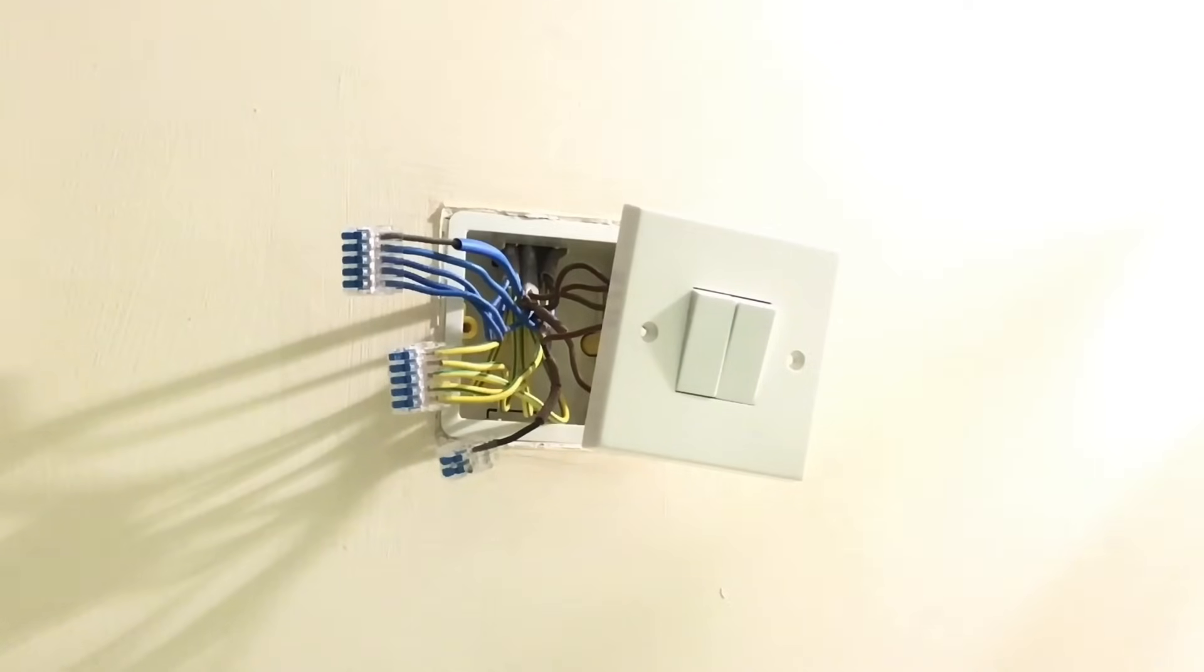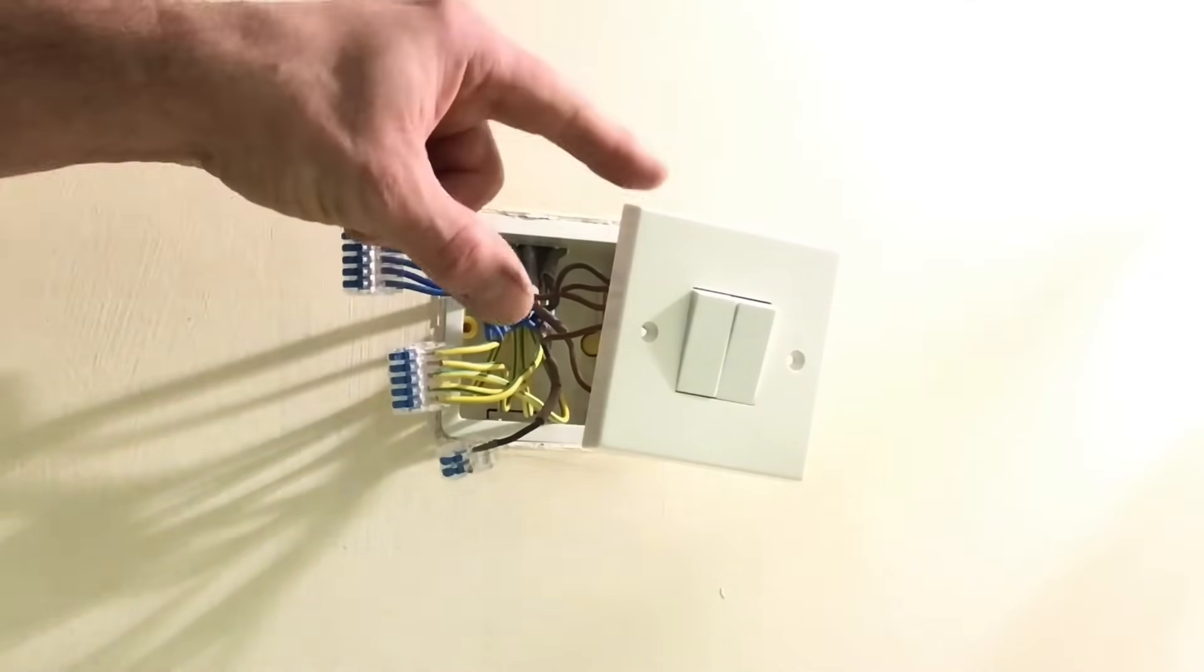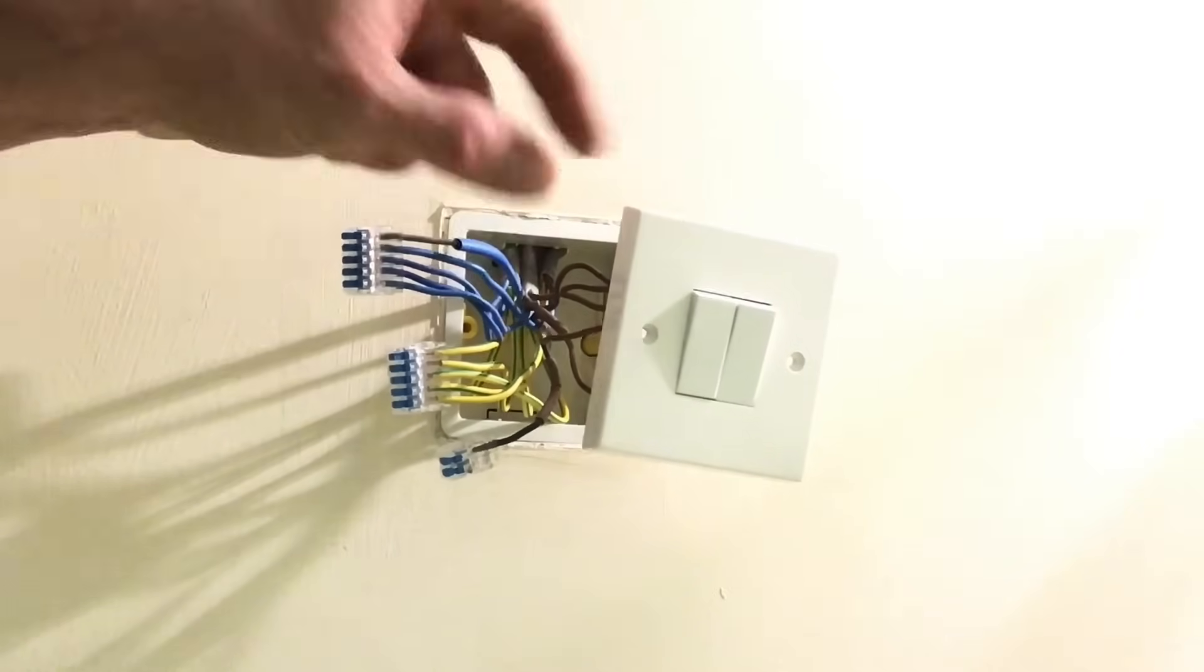However, there is also a feed coming out of here, going to feed a 5 amp socket outlet and plug top for a TV. And they've used a 3 core, which I would suggest was probably two-waying the main lights in the room. They've actually taken that 3 core out and used it as a feed to feed the other switch and then changed that switch to a one way outside lighting switch.